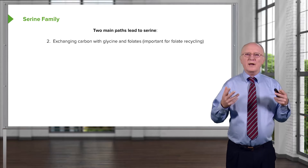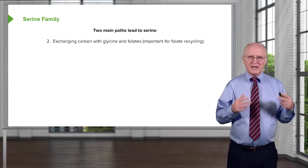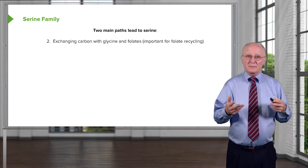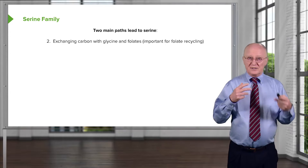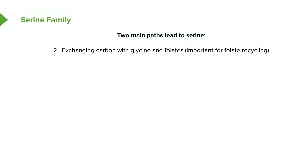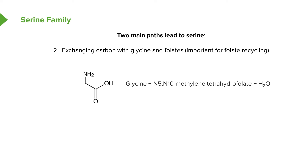This second pathway involves reactions related to folate metabolism, discussed in other lectures. It is important not only for making serine, but also in the reverse direction for making glycine, as well as interchanging the formation of different folates. The reaction starts with glycine and the folate molecule N5N10-methylene-tetrahydrofolate.